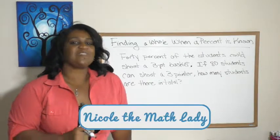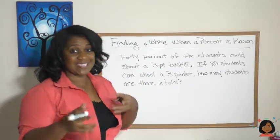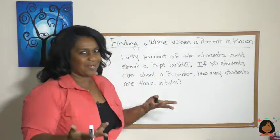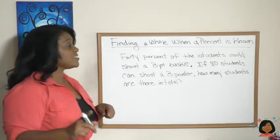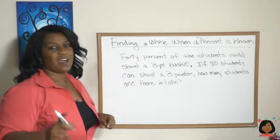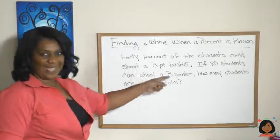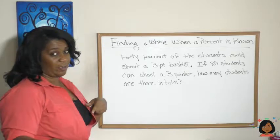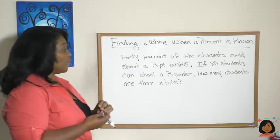Hi, it's Nicole the math lady. Today we're working on finding a whole when a percent is known. Take a look at the first example: 40% of the students could shoot a three-point basket. We're talking basketball here. If 80 students can shoot a three-pointer, how many students are there in total?